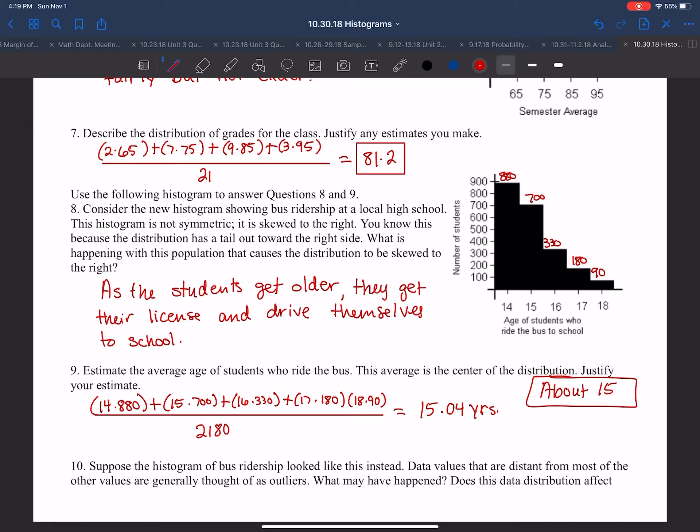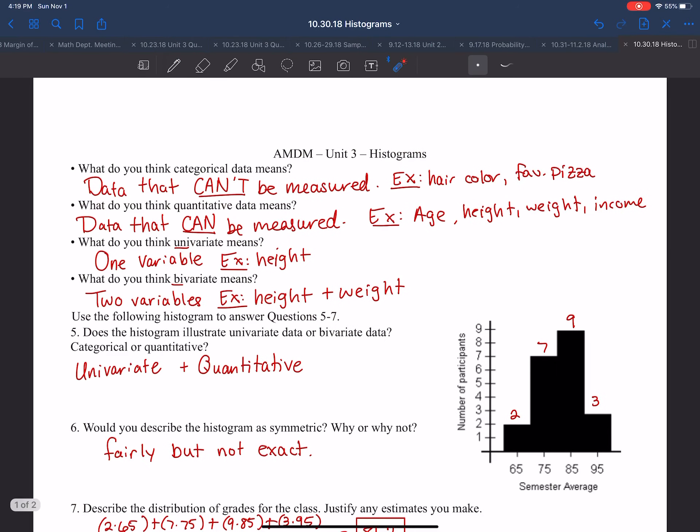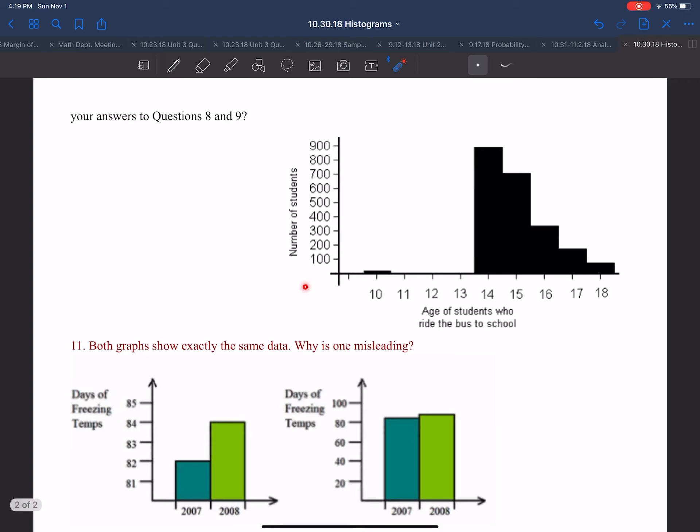Now it says, suppose a histogram of bus ridership looked like this instead. Data values that are distant from most of the other values are generally thought of as outliers. What may have happened? Does this data distribution affect your answers to questions 8 and 9? So instead of the graph that we had to start, we've got this graph right here. And it's asking us what's going on here.